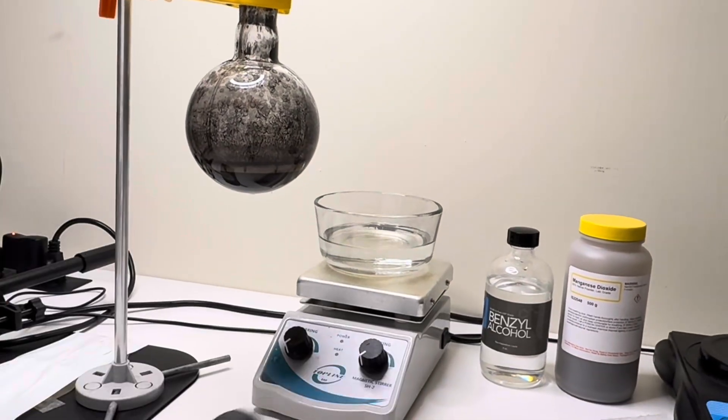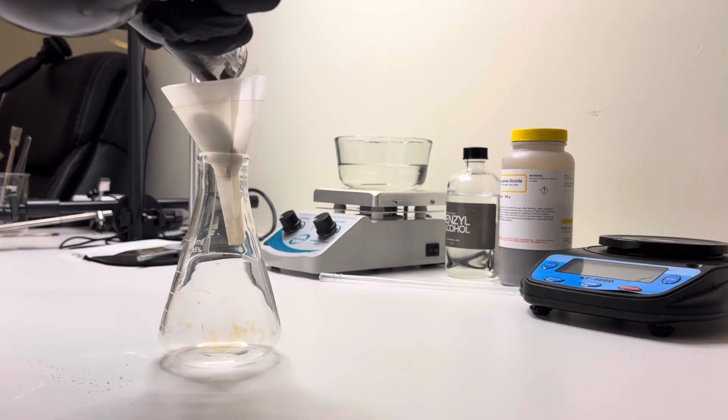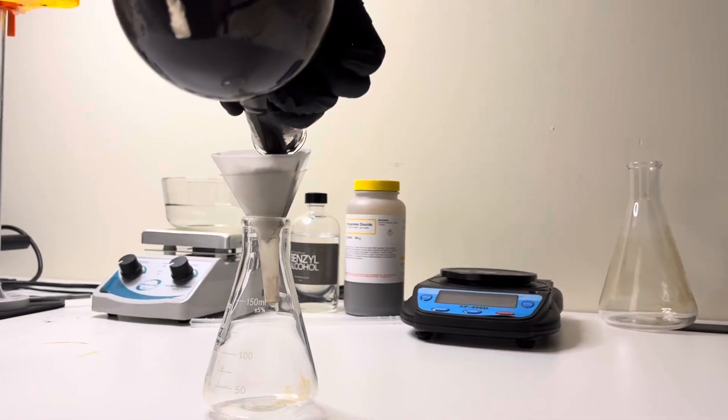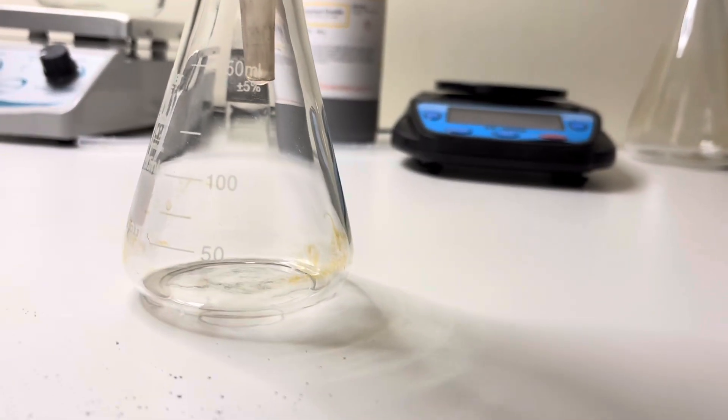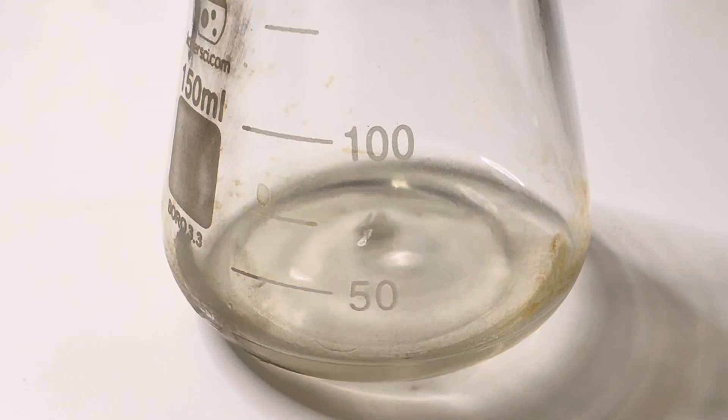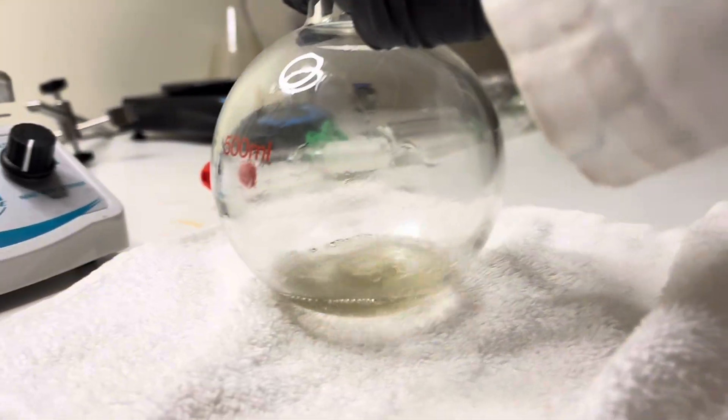That black solid is spent manganese dioxide. I'll separate it out using gravity filtration. The clear liquid contains our target product, benzaldehyde. It still needs to be purified to separate it from the acetone.